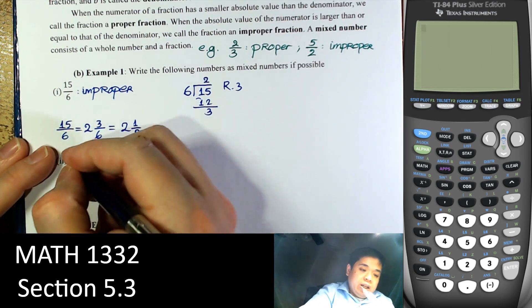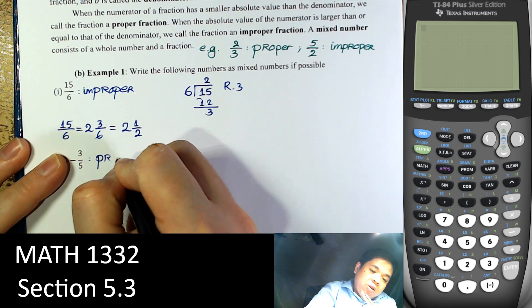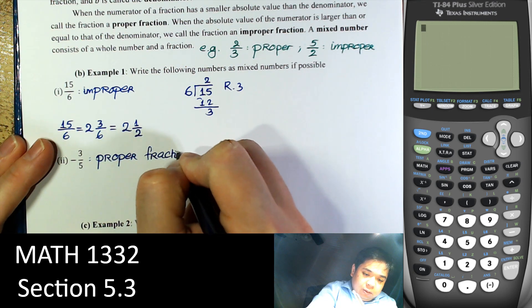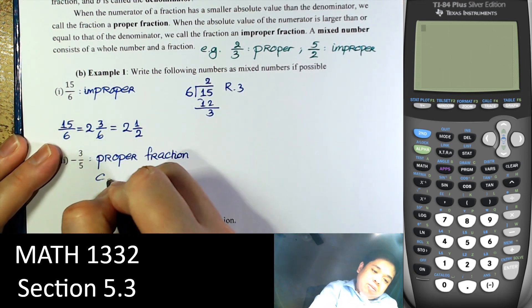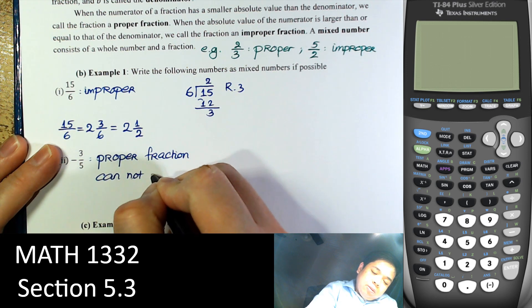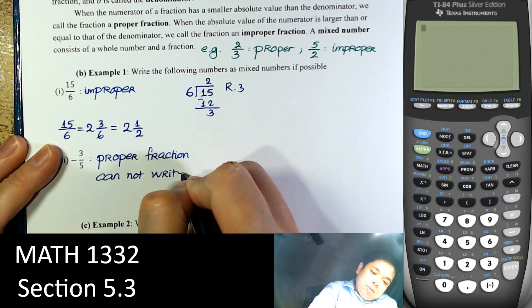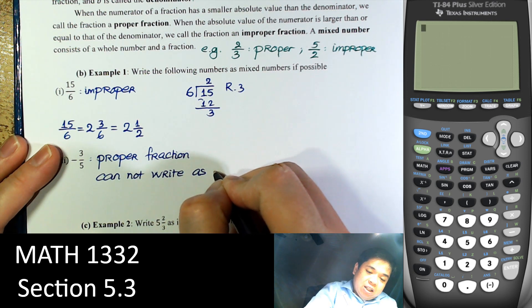Negative 3 over 5 — this is not improper; we just say this is a proper fraction. So we cannot write it as a mixed number.